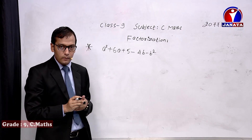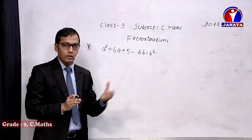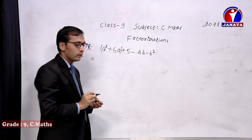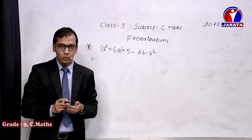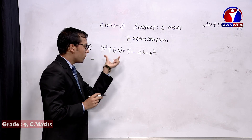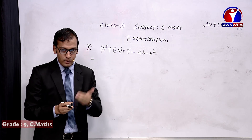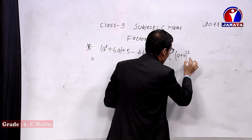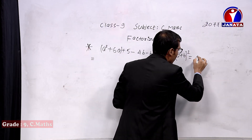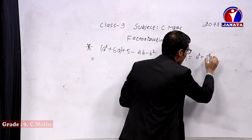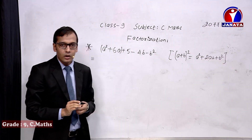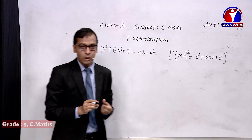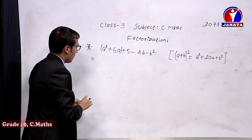Let us write the solution. For this type of factorization with five terms, first let us insert the two terms a² + 6a in a bracket. I am trying to convert this into a perfect square — into the (a+b)² form, whose expanded form is a² + 2ab + b².